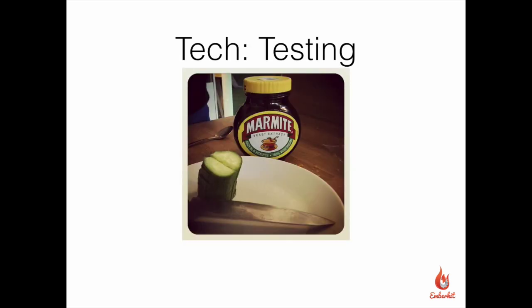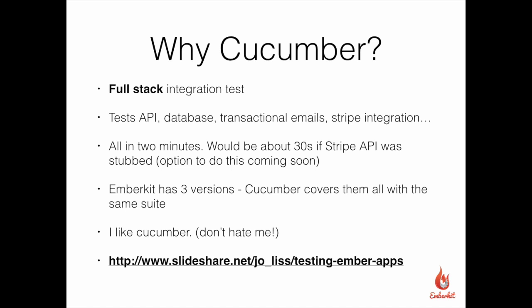Finally, I'm going to talk about testing. The reason I'm showing this slide is because I use Cucumber, and Cucumber is kind of a love-hate thing — lots of people really hate it and I really love it. The great thing about Cucumber is that it lets you test in a really abstract way. A lot of organizations abuse it — I've seen it abused to do unit tests effectively, and Cucumber is really slow for that. But if you keep it at a really high level, it can really help. The reason I chose Cucumber is I really wanted a full-stack integration test — I wanted to test everything from the front end to the database.